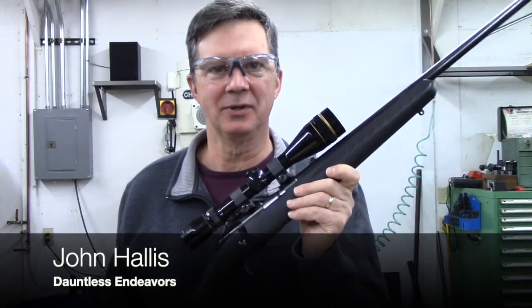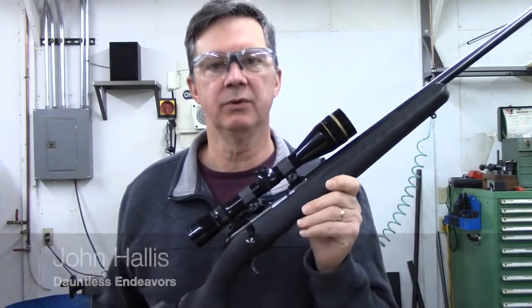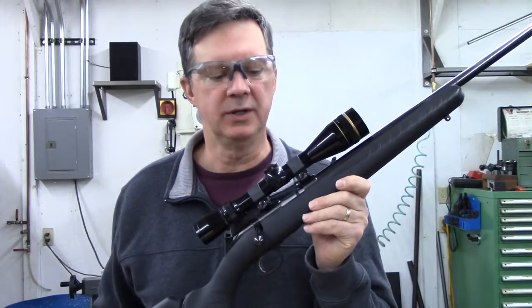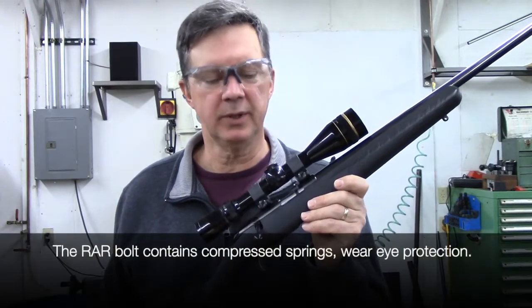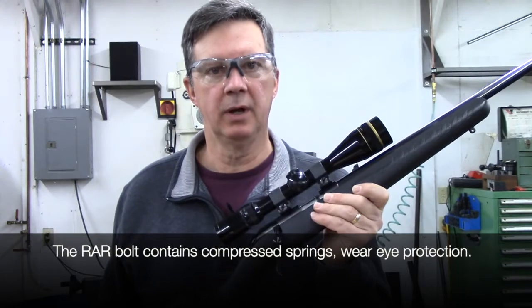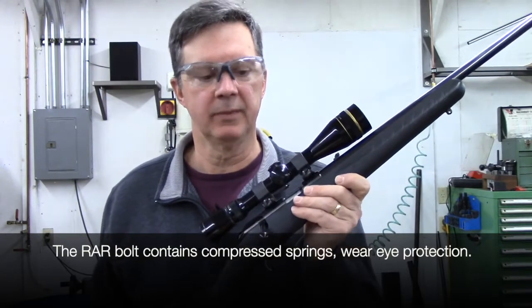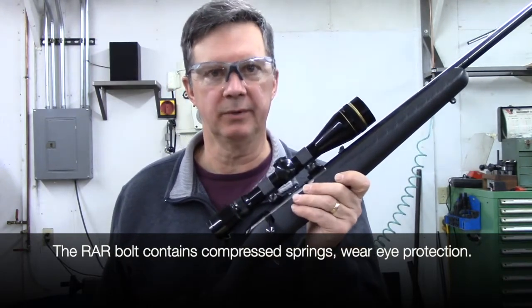Hi, I'm John Hallis from Dauntless Endeavors. In this video, we're going to go over the detailed disassembly and reassembly of the bolt on a Ruger American Rimfire. This one is chambered in .22 long rifle.